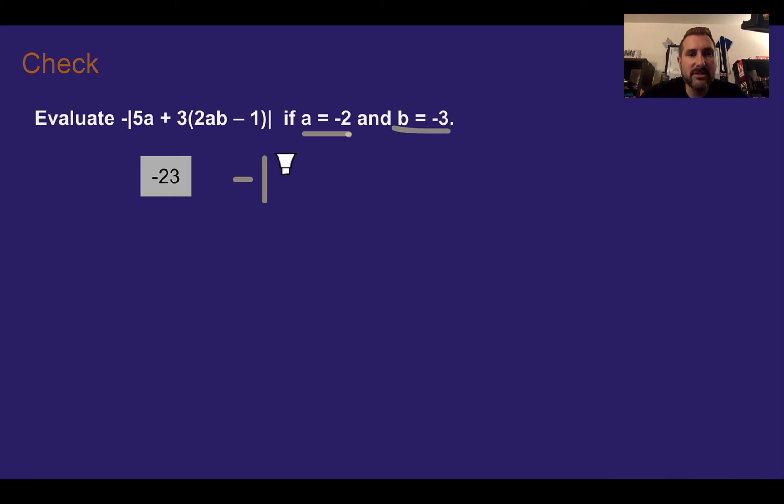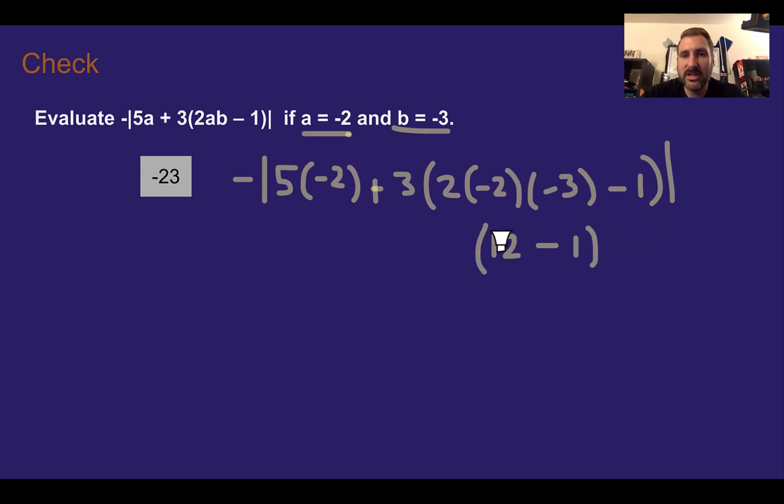So first we're going to substitute negative 2 in for a and negative 3 in for b. So I have negative absolute value 5a is negative 2 plus 3 times 2 times negative 2 again for a, negative 3 for b, minus 1 end parenthesis and absolute value. I'm going to simplify parentheses first to follow order of operations. So 2 times negative 2 is negative 4 times negative 2 is positive 12 minus 1. That's in our parentheses. If I just keep simplifying it I get 11.